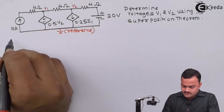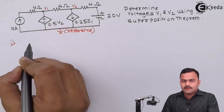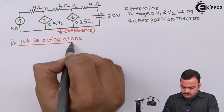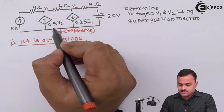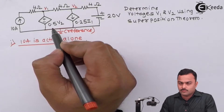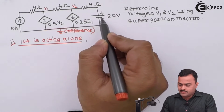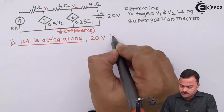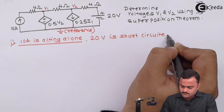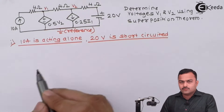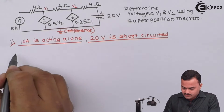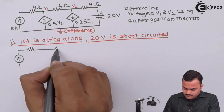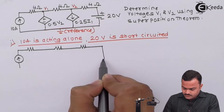First we are going to consider the 10 ampere source acting alone. Remember, you have to focus only on the independent sources for replacing by short circuit or open circuit. Since 10 ampere is acting alone, the other independent source — the 20 volt voltage source — will be short circuited. So 20 volt is short circuited and the circuit will change to look like this.